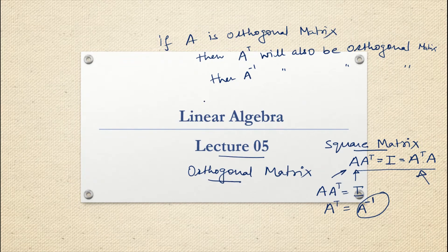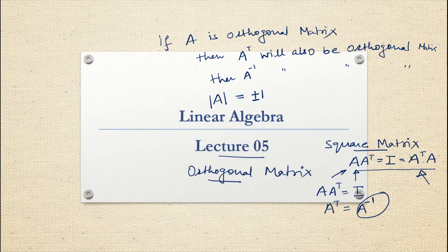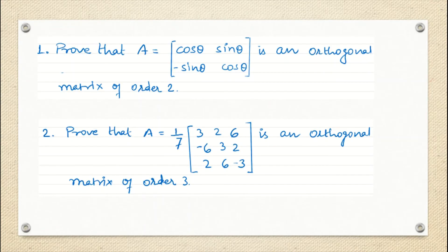An important property: the determinant of an orthogonal matrix will either be 1 or minus 1. Now we are going to check whether some given matrices of order 2×2 or 3×3 are orthogonal or not. The first question: prove that the matrix A with elements cos θ, sin θ, −sin θ, cos θ is an orthogonal matrix of order 2. The second question: prove that a given matrix is an orthogonal matrix of order 3.